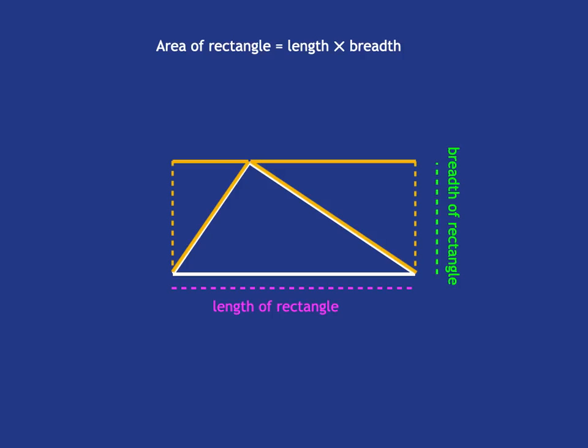But because the triangle, there are two lots of the original triangle in the rectangle, the area of the triangle then is just going to be half the area of the rectangle.